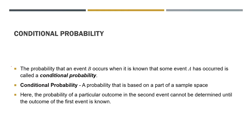The probability that an event B occurs when it is known that some event A has occurred is called a conditional probability. In other terms, we can say from the definition that in order for B to occur, it has to be known that an event A has already occurred.